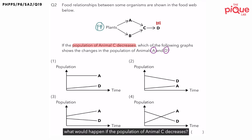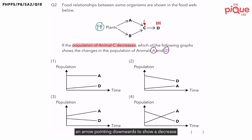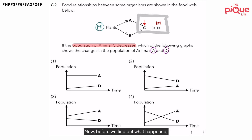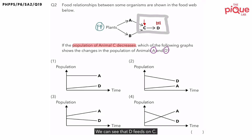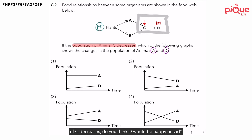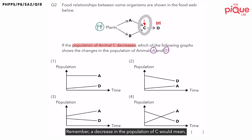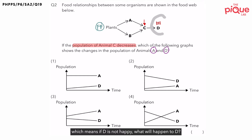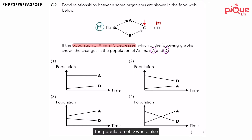In this question, they said what would happen if the population of animals C decreases? I'm going to draw an arrow pointing downwards to show a decrease in the population of C. Now, D feeds on C. If D feeds on C and the population of C decreases, there's going to be less food for D. If D is not happy, D is going to die, and when D dies, the population of D would also decrease.